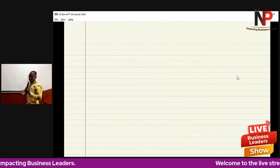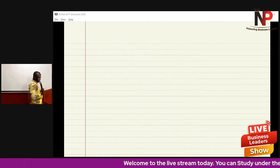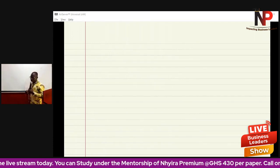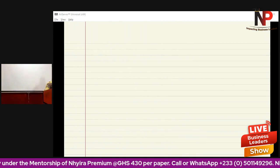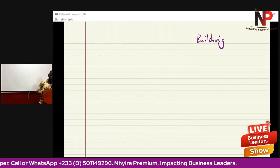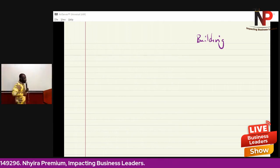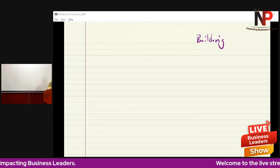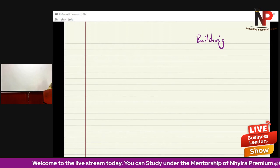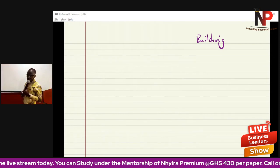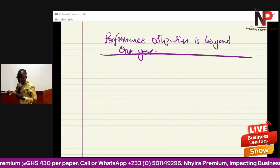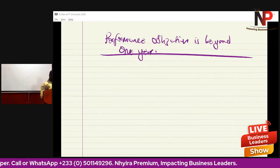Let's jump into the practical discussion. Generally, let's assume we are constructing a building. How do we recognize and measure the revenue? The building contract may be over five years or two years. The rule is: where performance obligation is beyond one accounting year, revenue will be recognized based on the percentage of completion.